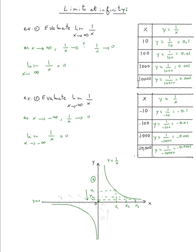As x approaches negative infinity, let's pick x₁, x₂, and x₃ on the negative side and see what happens to the y values. Here is y₁, y₂, and y₃. Same thing — the y values are approaching zero. The only difference is this is approaching from the negative y values. And that's it for this example.